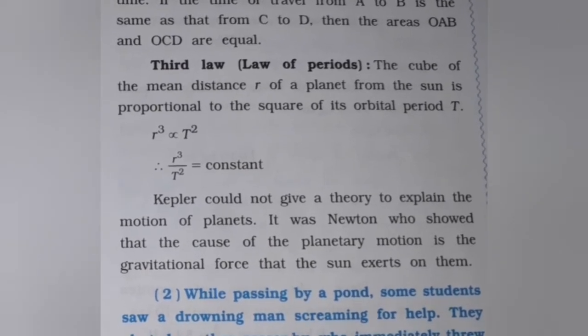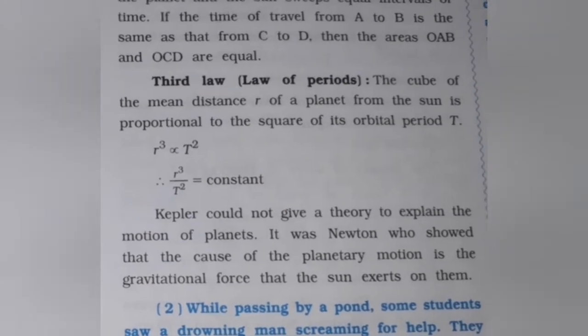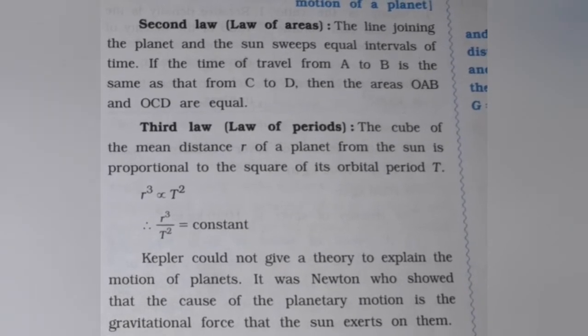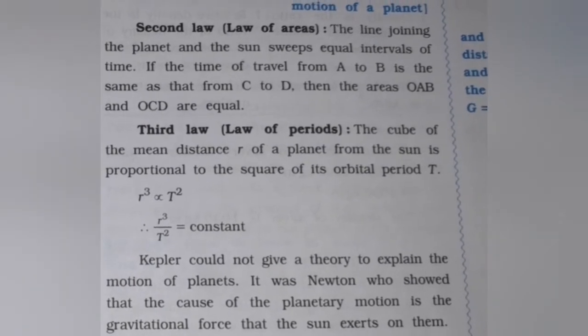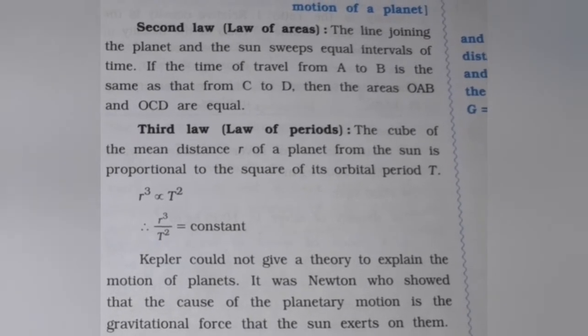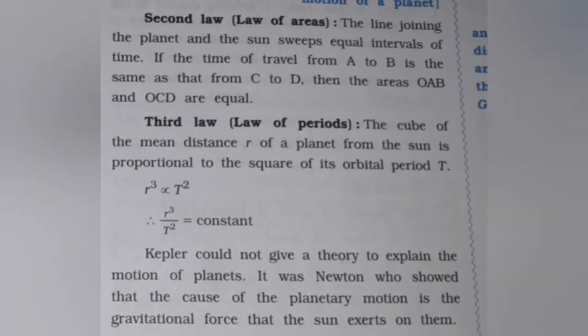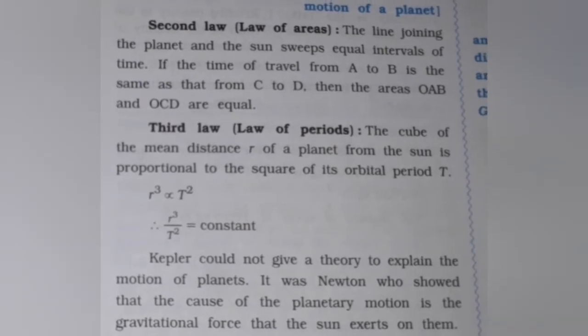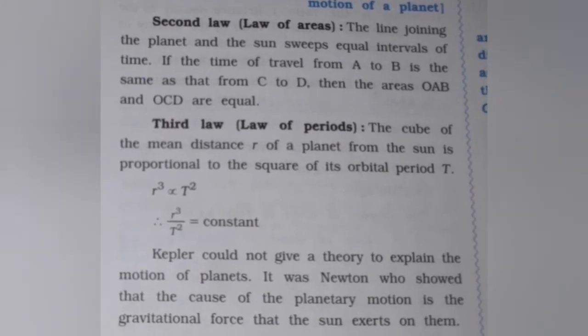Kepler could not give a theory to explain the motion of planets. It was Newton who showed that the cause of planetary motion is the gravitational force that the sun exerts on them, as given by the theory of Newton.